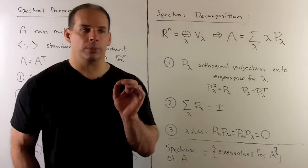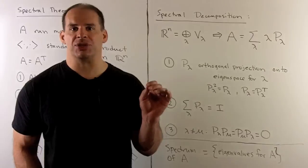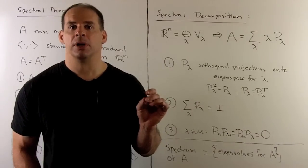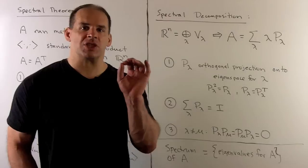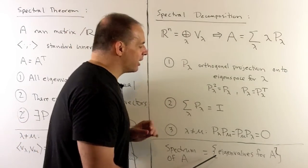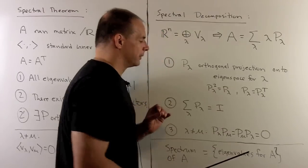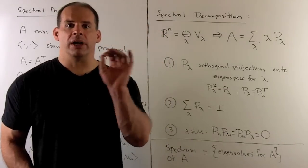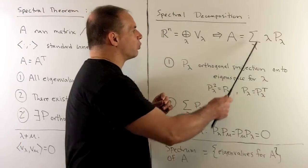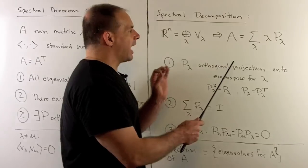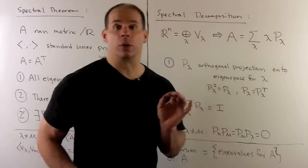Now, a final note: we have the spectral theorem and spectral decomposition. What does 'spectral' mean? The definition of the spectrum is just the set of eigenvalues for A. So what we're doing is taking A and rewriting it as a sum in terms of the eigenvalues — the spectrum.